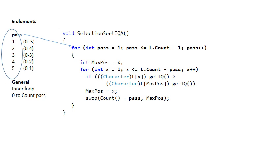So your outer loop goes from pass equals one to L dot count minus one. So if you have count elements, you need to do count minus one passes.